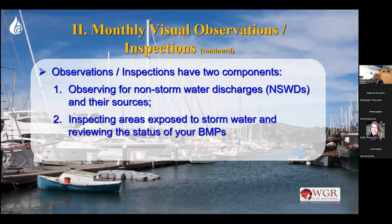So in your monthly inspection: one, look for non-stormwater. If it's leaving, determine what it is — authorized or not authorized? And two, look at your area. Look at your BMPs and ask: are we doing these things? Are we sweeping? Are there drains that need to be addressed? How are the berms? How's the roof? Are there holes in the roof? All those things are something you take a survey of once a month.